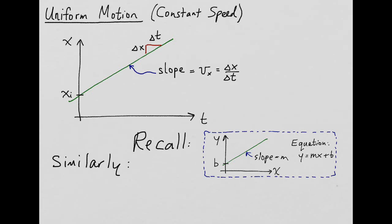For uniform motion, we plot x versus time, with x on the vertical axis and time on the horizontal axis. The green line represents the x position of the object as a function of time. At time equals zero, it's at the initial position x sub i. As it goes on, there is a slope v sub x, which is delta x divided by delta t, and that's positive.